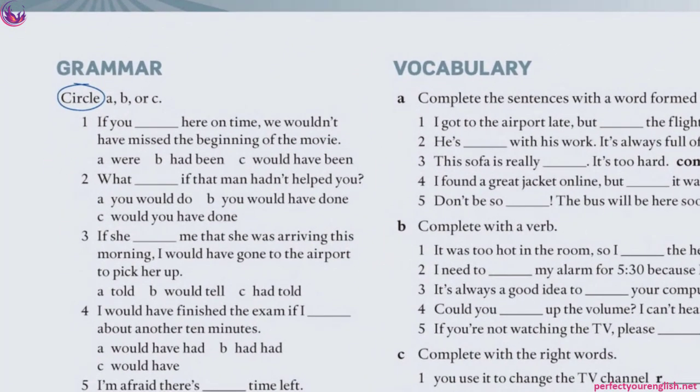Number 1: 'If you had been here on time, we wouldn't have missed the beginning of the movie.' B is correct — Conditional type 3. In the if-clause we use past perfect, and in the result clause we use 'would have' plus the third form of the verb. You didn't come on time, so we missed the beginning of the film. We're imagining: if you had come on time, what would have happened? C is wrong because we don't use 'would have been' in the if-clause for type 3 conditionals.